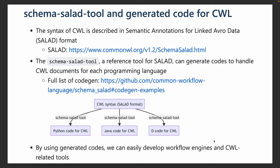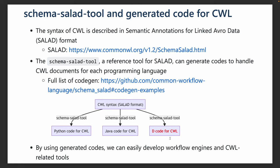Such generated code basically includes data structures, such as command line tool and workflow types. Also, some code generators include parsers for them. By using such generated code, we can easily develop CWL-related tools. In this talk, I will focus on the D code for CWL.